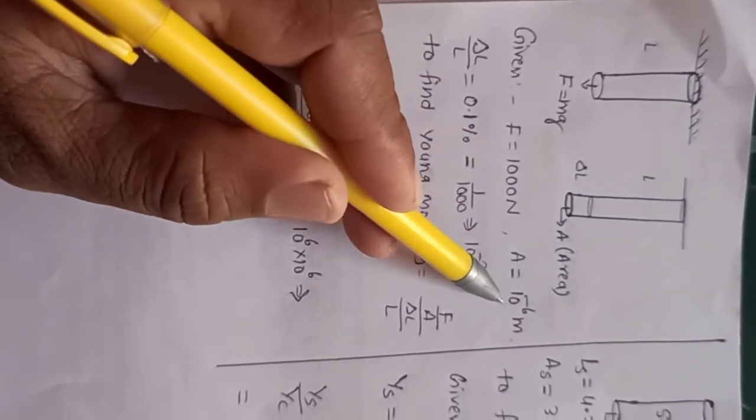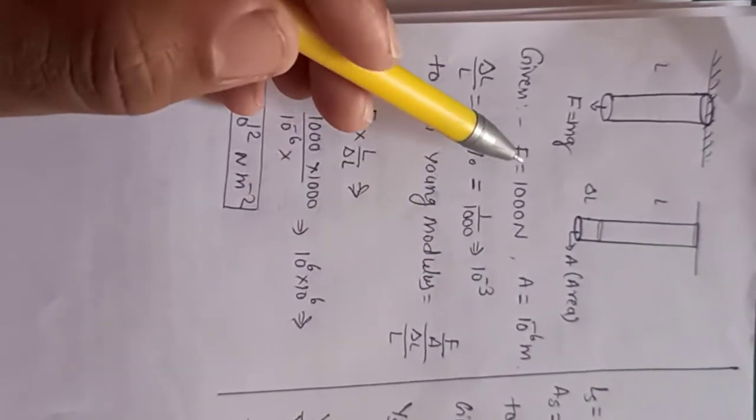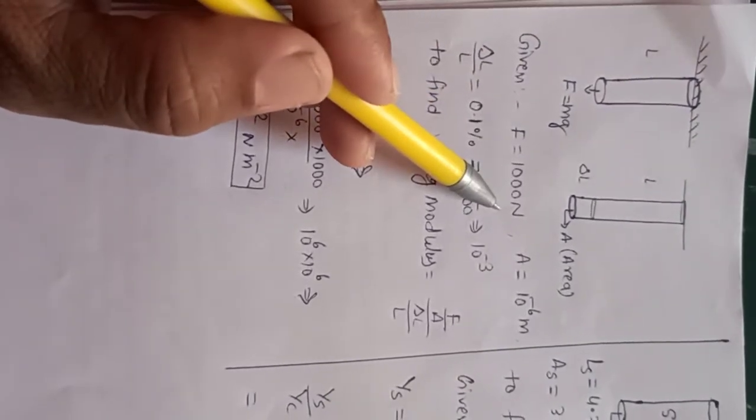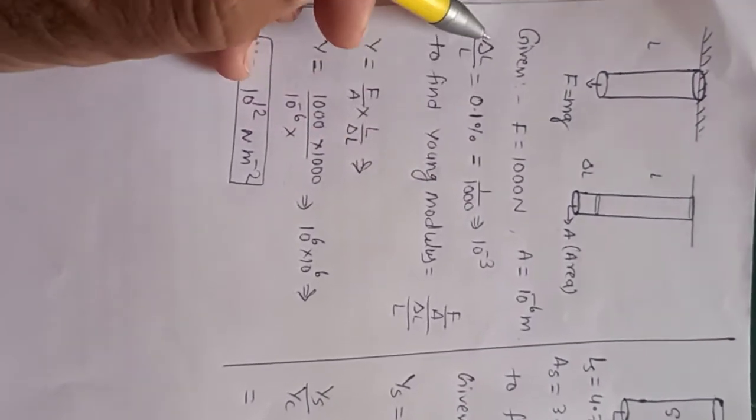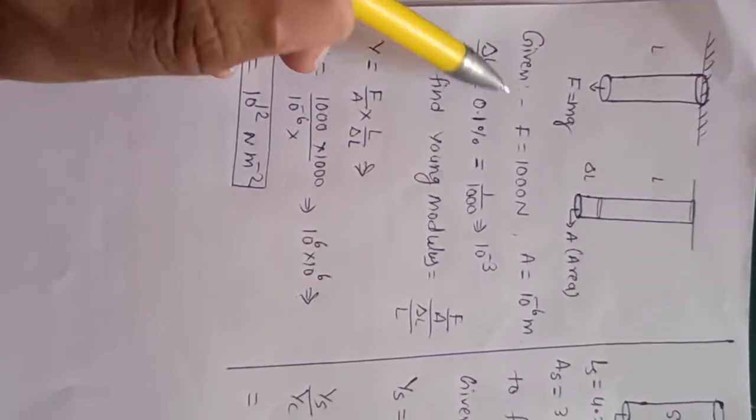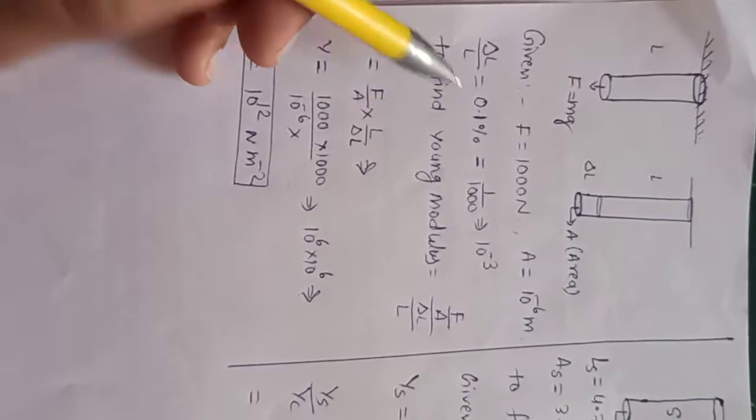It is given that A is equal to 10 to the power minus 6 meter square, and the applied force is 1000 Newton. The change in the length is given as ΔL/L = 1%, so we have to find Young's modulus.